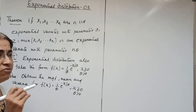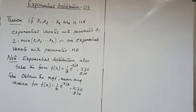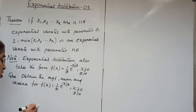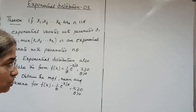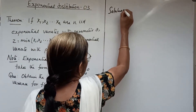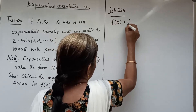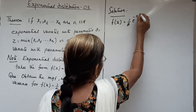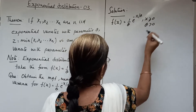Another form is 1 by theta e raised to minus x by theta. So now we obtain the moment generating function, the mean and variance for this f of x equal to 1 by theta e raised to minus x by theta. We consider f of x equal to 1 by theta e raised to minus x by theta, x greater than or equal to 0, theta greater than 0.